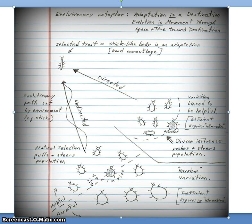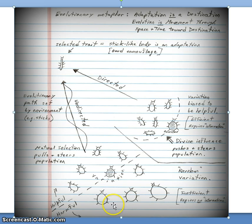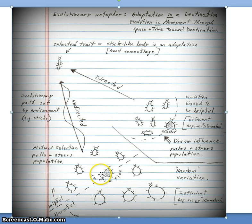In summary, we can think of this evolutionary process in metaphorical terms. Adaptation is a destination. Evolution is movement through space and time toward that destination. This individual has an adaptation — a heritable trait that helps individuals survive in their environment — and we can think of that as a destination. Natural selection is a process that is causing this population to evolve towards that destination, with the selected trait being the stick-like body and its good camouflage. Over here there is also a destination, but it's not a natural process — there's a divine influence that is pushing this population towards that destination.